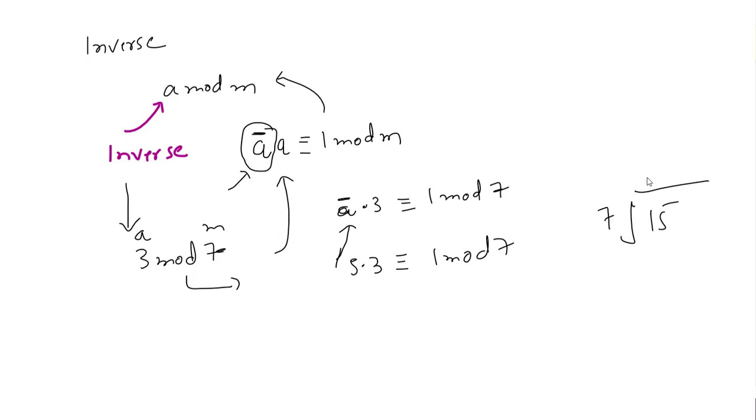...7, this will be 7 times 2, and this will give us 14, and we'll have a remainder of 1. So this does fulfill this condition. Therefore 5 is the inverse of 3 mod 7.